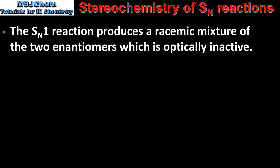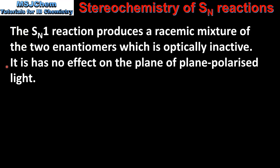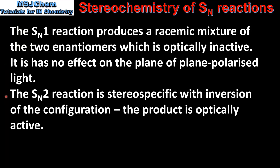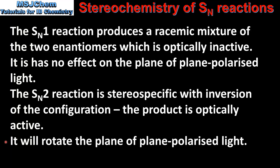The SN1 reaction produces a racemic mixture of the two enantiomers, which is optically inactive. This means it has no effect on the plane of plane-polarized light. The SN2 reaction is stereospecific with inversion of the configuration. The product is optically active, and therefore it will rotate the plane of plane-polarized light.